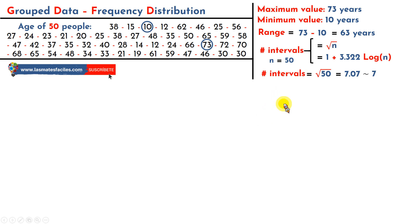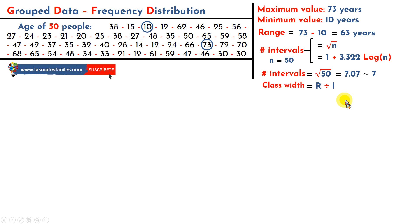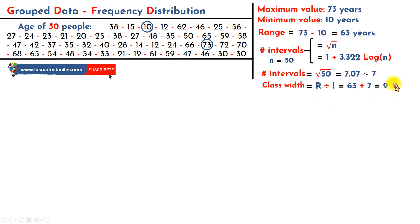Now we are going to calculate the width of the intervals — the class width. The class width is very simple to calculate. What I will do is take the range and divide it by the number of intervals. The range is 63 years distributed into 7 intervals: 63 divided by 7 equals 9. That means each interval will have 9 years between its lower limit and upper limit.